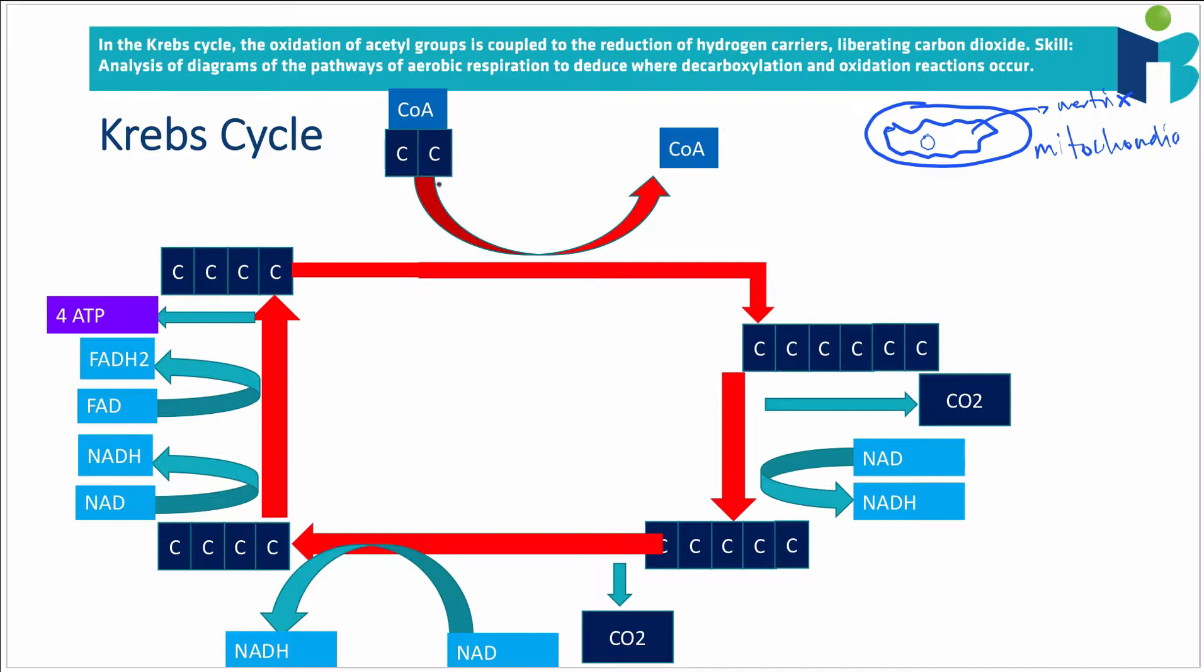So the acetyl-CoA will pass on the two-carbon acetyl compound onto a four-carbon molecule. And then the CoA enzyme will return back to the link reaction and pick up some more acetyl, and then that kind of keeps going.